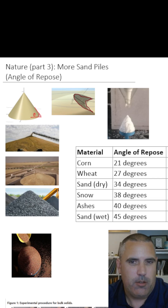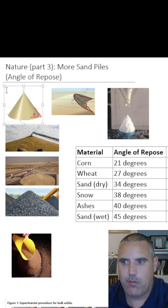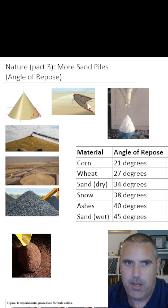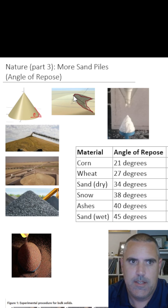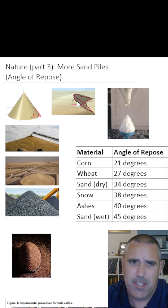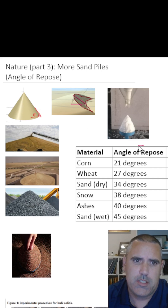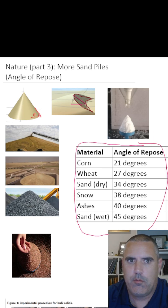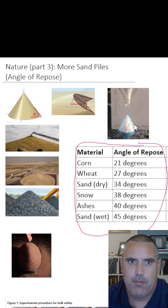My goal in this video — and I have a longer video where you can learn more — is to show you how I happened upon this. In the previous video I talked about sand piles, bark, and dunes, and the angle you get is 34 degrees for dry sand. That's called the angle of repose, and different materials pile up to different angles before they start falling over. People have even studied snow and used it to talk about avalanches.